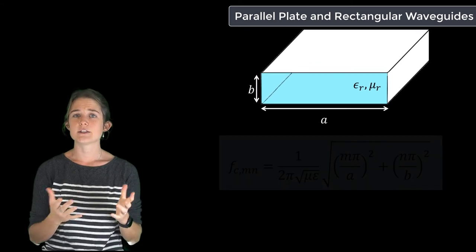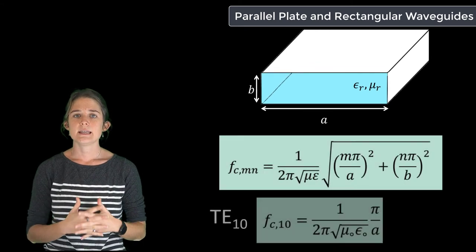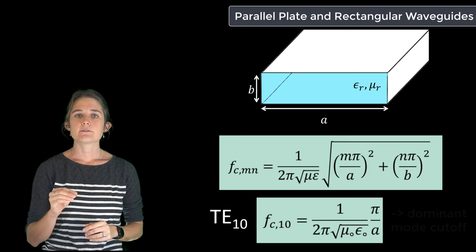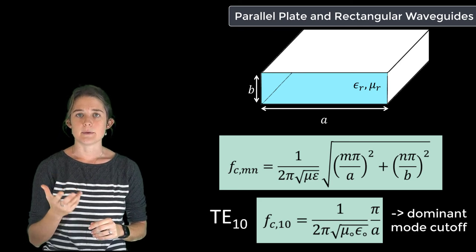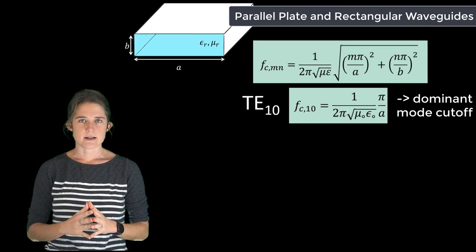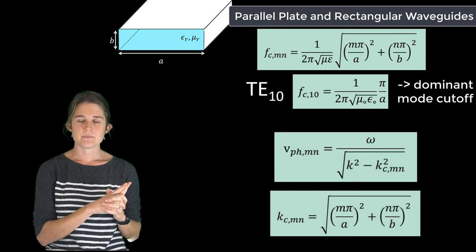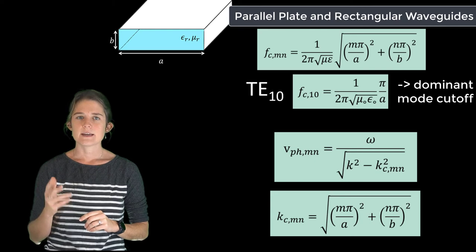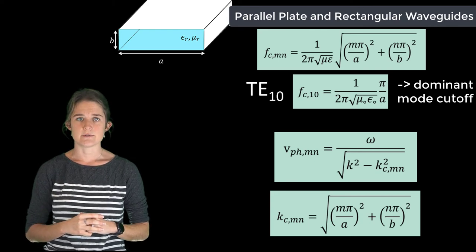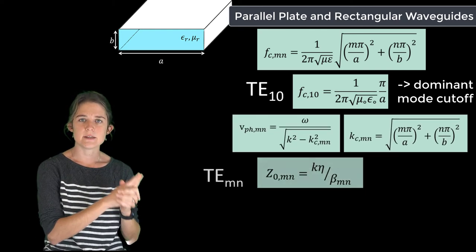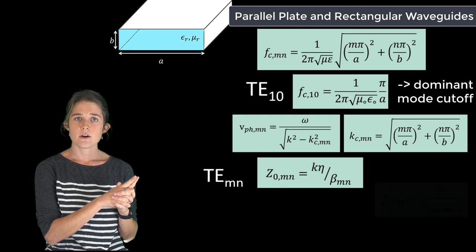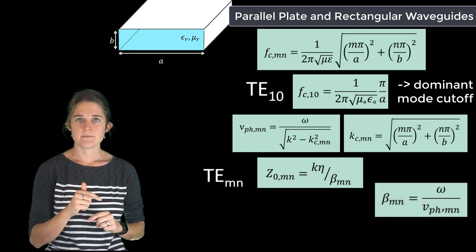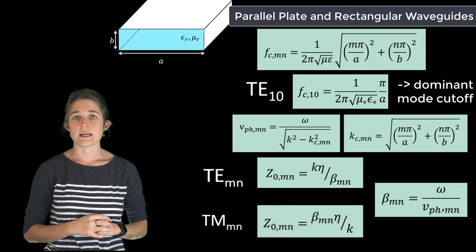If the a dimension is greater than the b dimension, TE10 results in the lowest cutoff frequency and is therefore the dominant mode. The phase velocity is given by these equations and is different for each set of m and n values. The characteristic impedance is also different for each mode, calculated from one equation for TE modes — where beta mn is equal to omega over the phase velocity — and from a separate equation for TM modes.